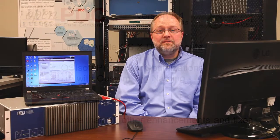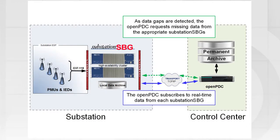The new substation SBG and the Open PDC version 2.1 operate together to allow automated recovery of data outages that can occur due to network outages, system failovers, or system reboots. As you can see on this screen, there are two pieces to this puzzle.